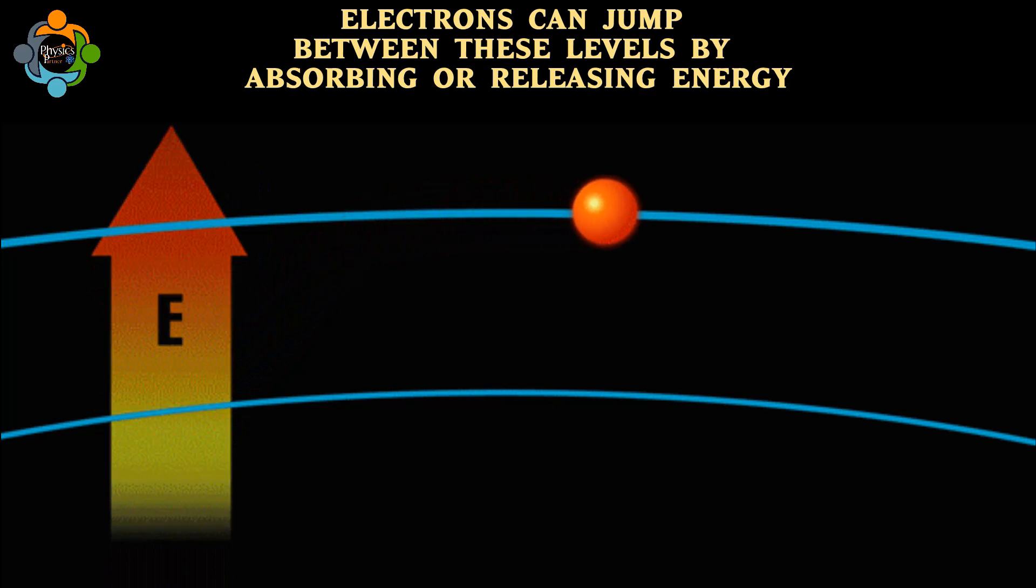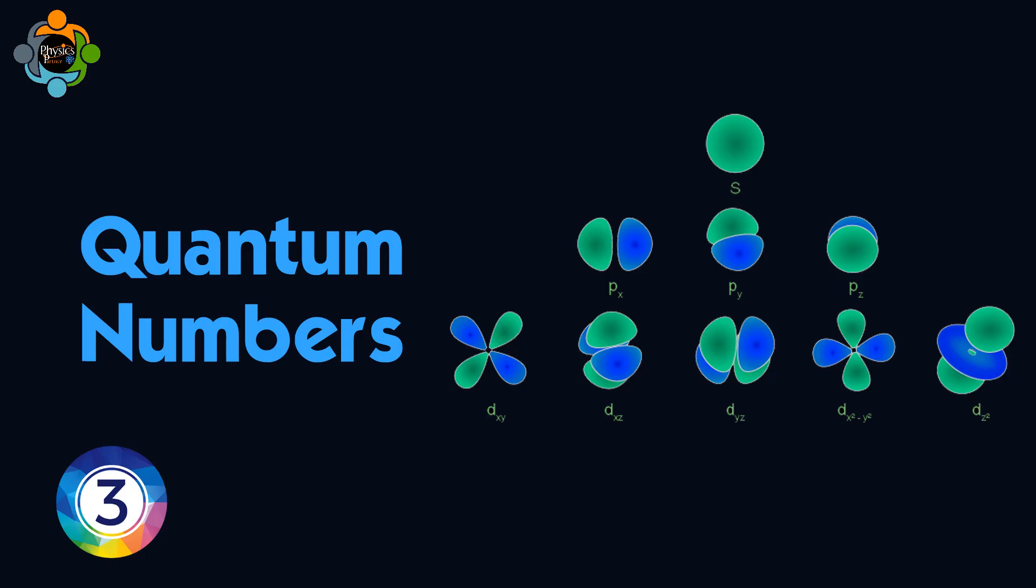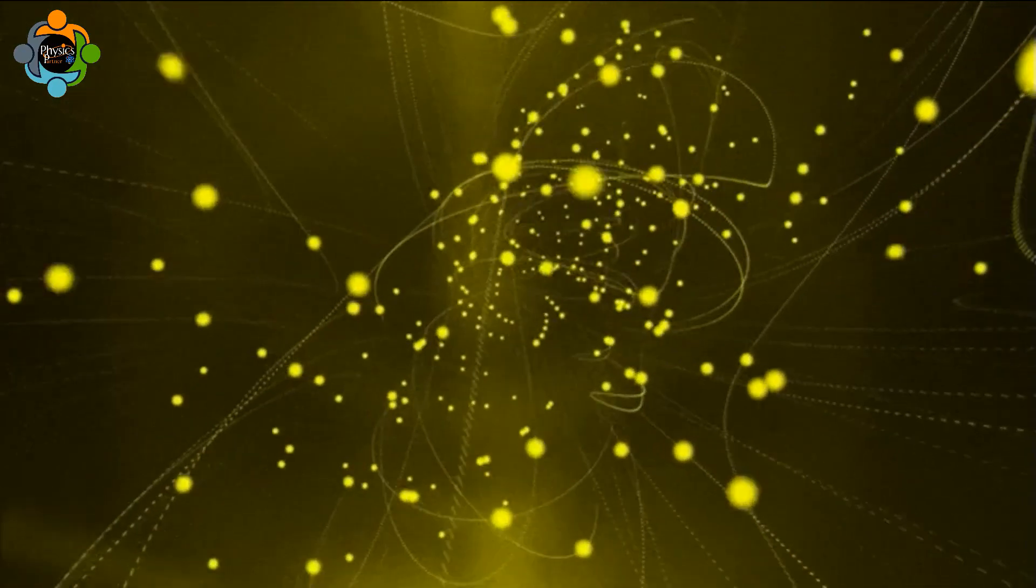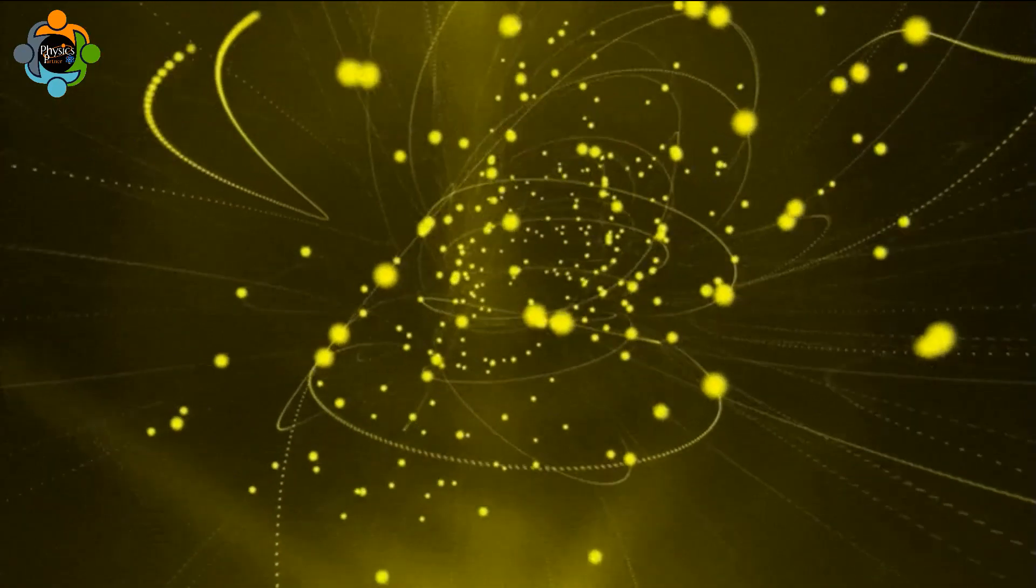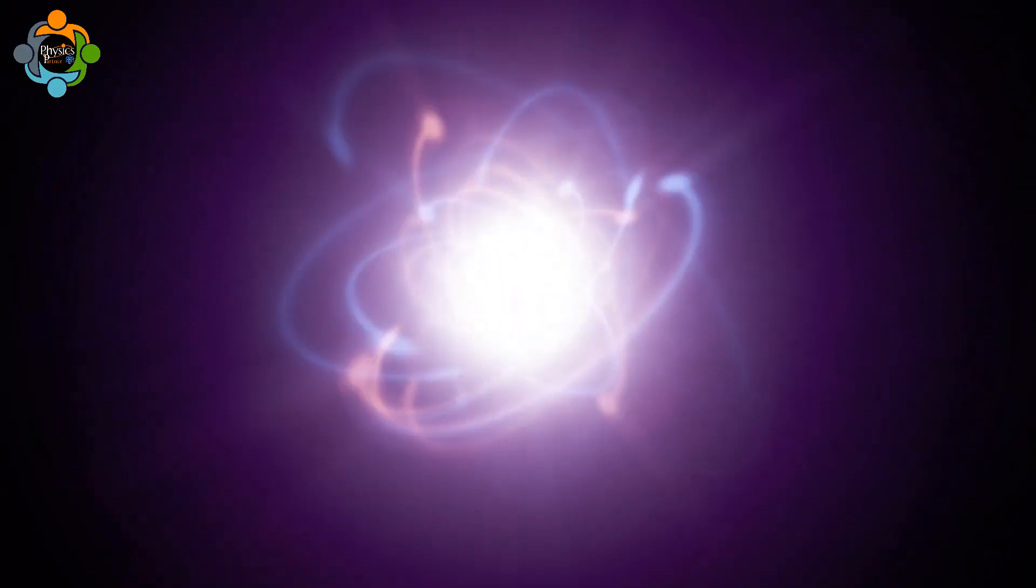When they drop to a lower level, they release energy as light—that's how we get different colors. Number three: quantum numbers. Each electron in an atom is described by four quantum numbers. These are like the electron's ID card, telling us everything about its energy and position. It's how we keep track of all those fuzzy electron clouds.